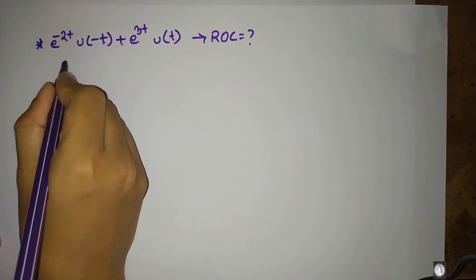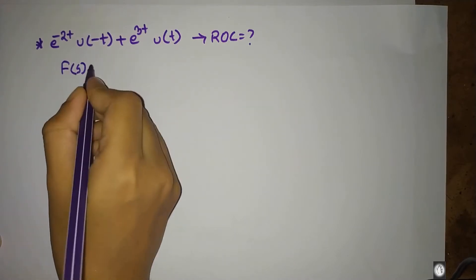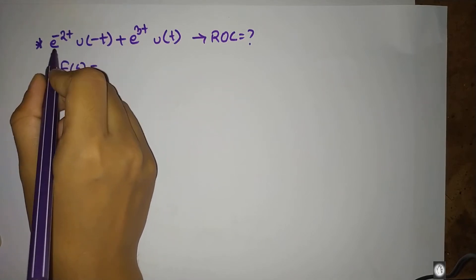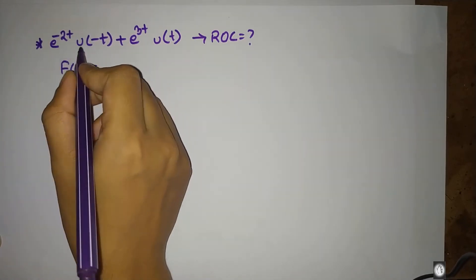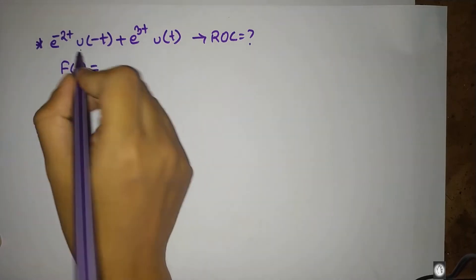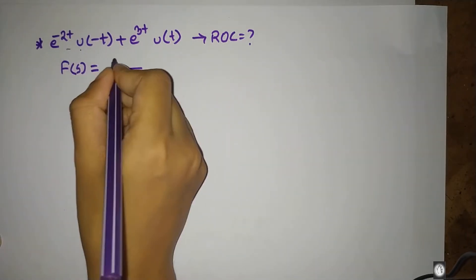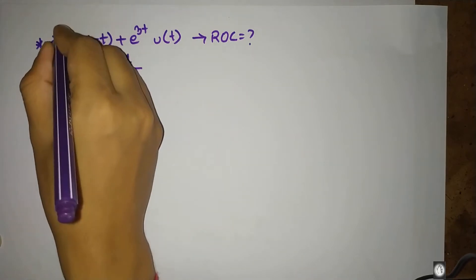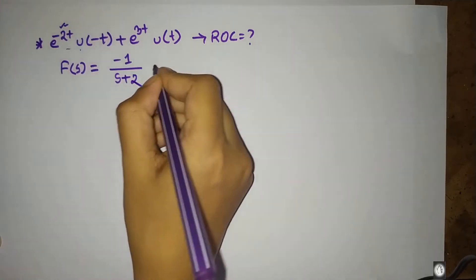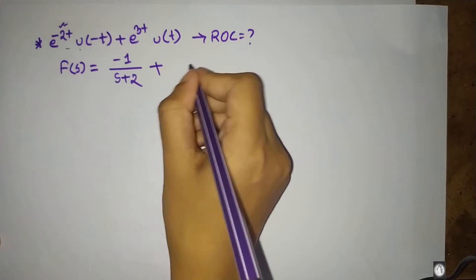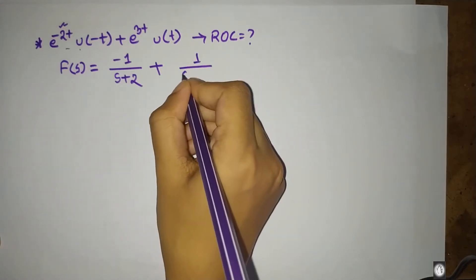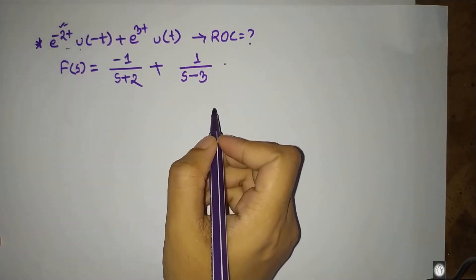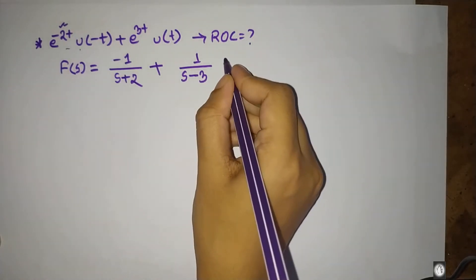First, we compute the Laplace transform. For e to the power minus 2t, u of minus t, the integral from minus infinity to 0, that is equal to minus the capital term to the power, showing the transform result with the relevant terms combined.